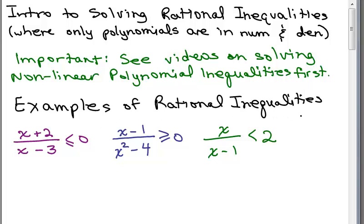Examples of rational inequalities are shown here. Basically, rational means you're going to have a fraction and you only have polynomials in the numerator and denominator. Remember 2 could be written as 2 over 1, so that's really still just a fraction, and a constant could also be a polynomial — you don't have to have an x value.